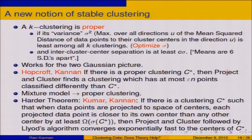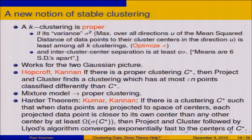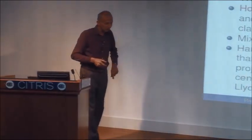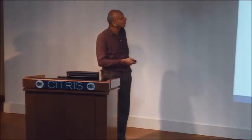The mixture model satisfies proper clustering. More formally: if there is a clustering C* such that when data points are projected to the space of centers, each projected data point is closer to its own center than any other center by at least a few sigmas, then project and cluster gives you a good start. When you follow that by Lloyd's algorithm — one of the most used algorithms in practice — it proves convergence of this algorithm, provided you start with the spectral clustering centers.